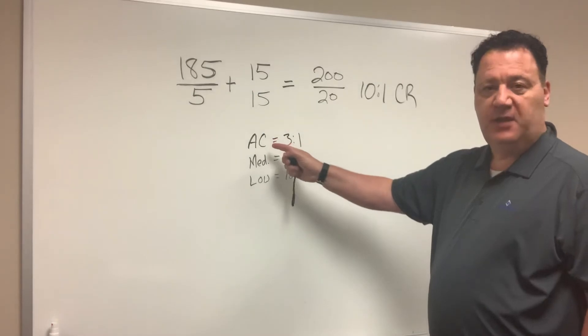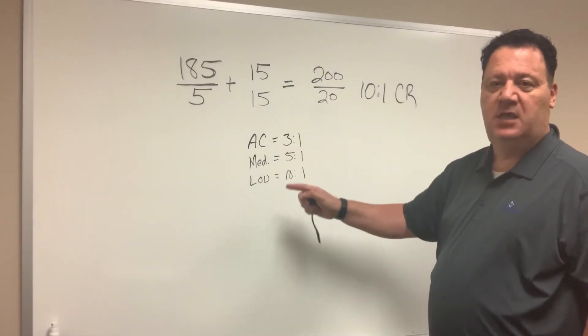If you're working with air conditioning, it's 3 to 1. Medium temperature, 5 to 1. Low temperature, 10 to 1.